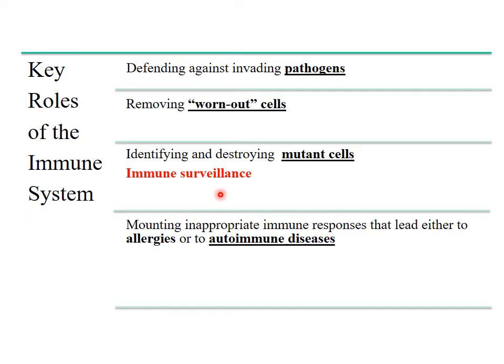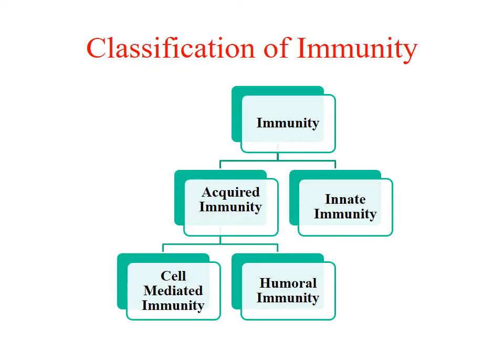Besides this, the system also evokes some inappropriate immune responses like allergy, which occurs when the body turns against a normally harmless environmental chemical entity. It can also cause autoimmune diseases, which happen when the defense system erroneously produces antibodies against a particular type of the body's own cells. This slide shows the classification of immunity.